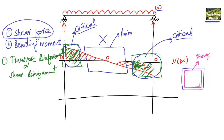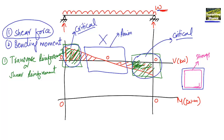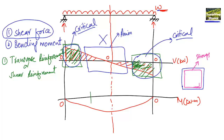Now for the bending moment, we use the second reference line — in kilonewton-meters. Taking the zero reference line, the bending moment diagram for the uniformly distributed load W on this simply supported beam starts at zero at the supports and reaches its maximum at the midpoint.